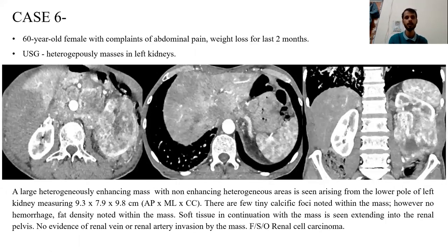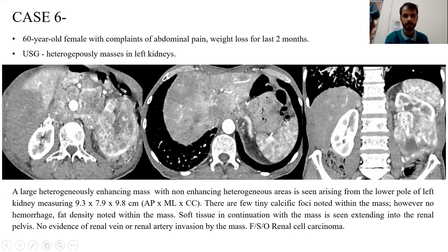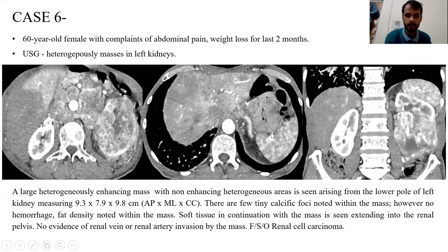Case 6: A 60-year-old female with abdominal pain and weight loss for the last two months. Ultrasound shows a heterogeneous mass in the left kidney. CT shows a large mass in the lower pole of the kidney with complete destruction of its architecture. There is a chronic calcific area within the mass, but no fat density or hemorrhage. The mass involves part of the renal pelvis, causing destruction of the lower pelvic system architecture, with no evidence of renal vein or IVC invasion. This is a case of renal cell carcinoma.